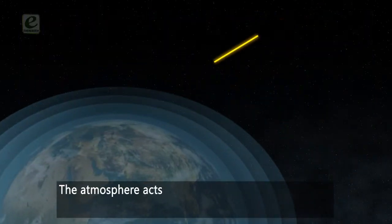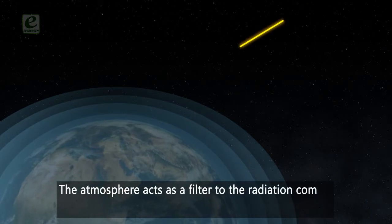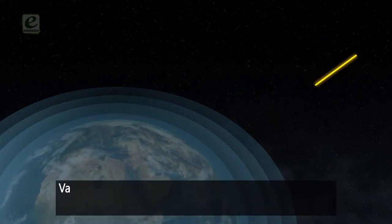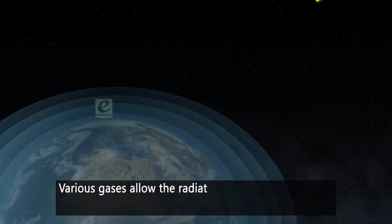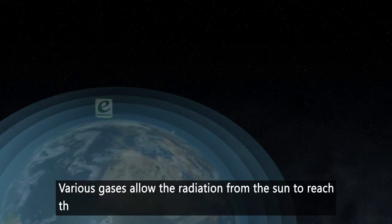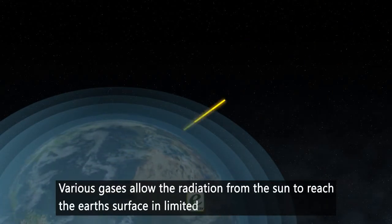The atmosphere acts as a filter to the radiations coming from the Sun. Various gases allow the radiations from the Sun to reach Earth's surface in limited amounts.